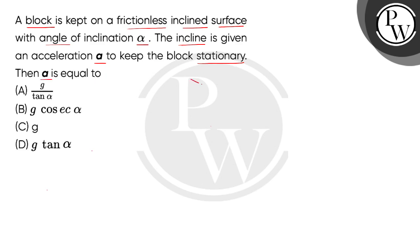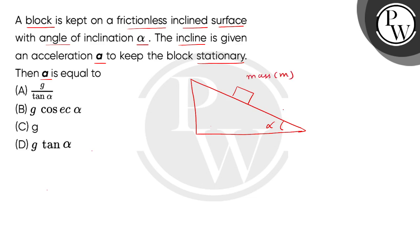Consider a frictionless inclined surface where the angle of inclination is alpha, and this inclined surface has a block placed on it. Consider this block of mass M. The incline is provided an acceleration A, and we have the condition of maintaining this block at rest.